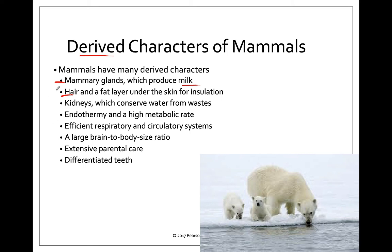Some of these other derived characteristics are found in all mammals, but things like kidneys — other groups of organisms obviously have kidneys — but they have advanced to be able to conserve more water now that mammals are not necessarily near the water.